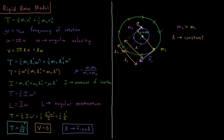Another quantity we can introduce is nu, the frequency of rotation. Nu is the frequency at which we're rotating around this center of mass — how many rotations do we do per second — so that's in units of one over seconds, or hertz. We also have omega, which is angular velocity, just as we saw with the harmonic oscillator. That's two pi times the frequency of rotation.